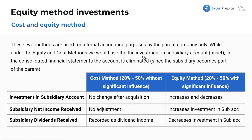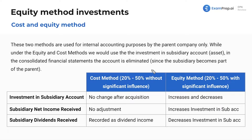Under the fair value method, if I buy some stock of Apple, I'm going to list the asset as 'Apple stock' — that's an asset under my investments. Here, we use 'Investment in Home Depot' or 'Investment in Costco' — that's just the name of the asset account we use. In the consolidated financial statements, the account is eliminated. When we go above 50%, we eliminate that account and treat it as consolidation.